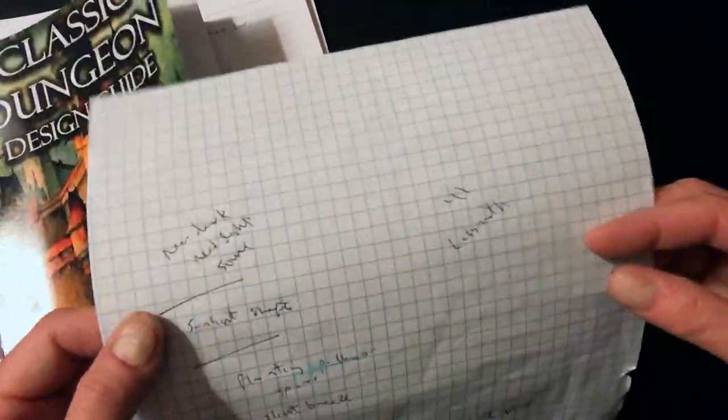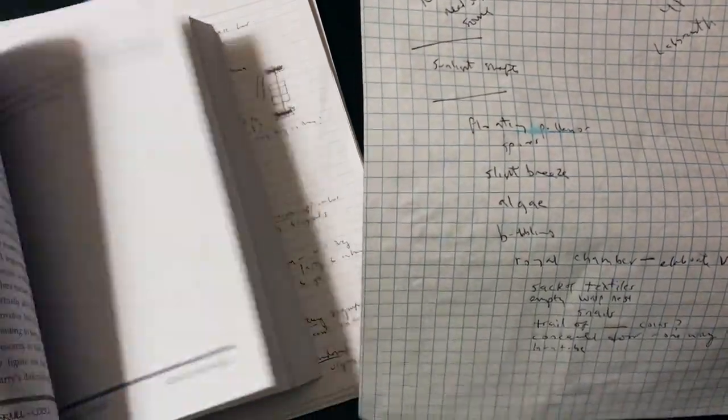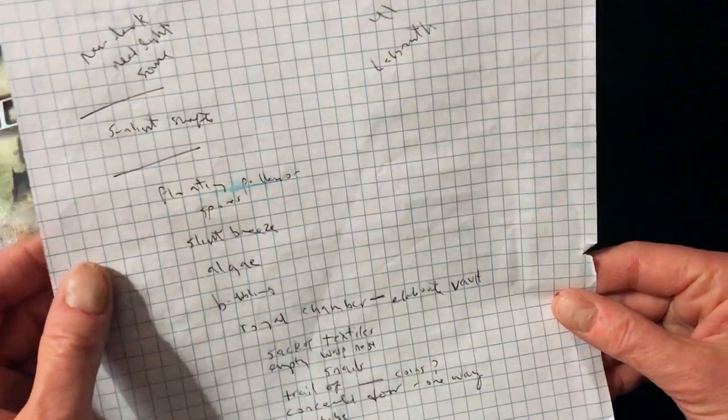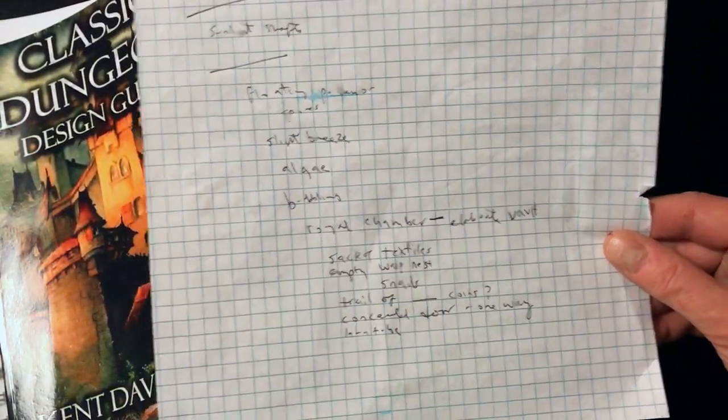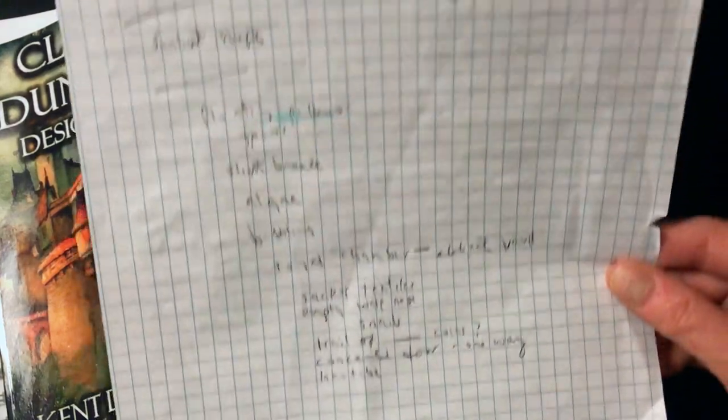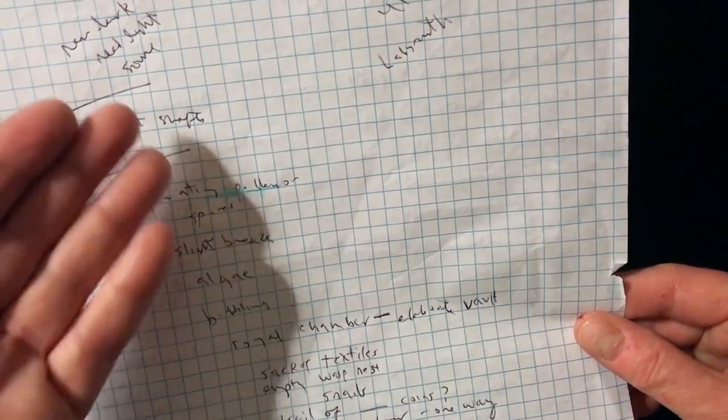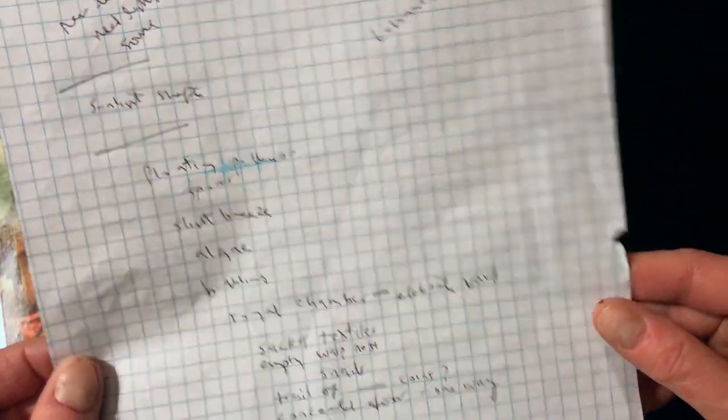It doesn't necessarily have to be a dungeon underground, it is a confined space. There are attributes - as I mentioned the book gets more specific as you go. I did some dice rolling off camera and I came up with this list of things that is going to be a bit of a guide for me. It's relatively near dark in there, there's some sunlight shafts that come through, there are some floating spores, a slight breeze, there's algae.